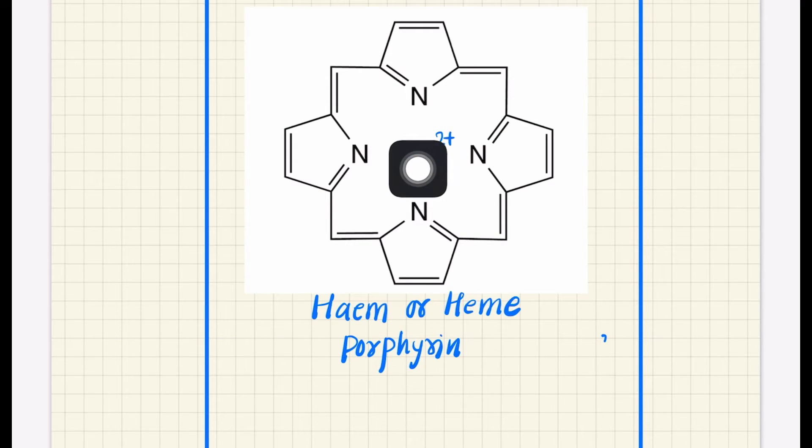When you mix the solution of Mg2+ and this porphyrin ring, now the color will form. So together they are colorful, but individually both are colorless.